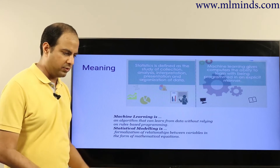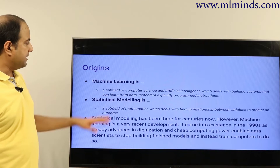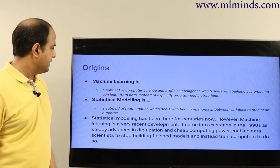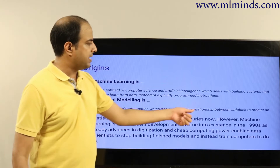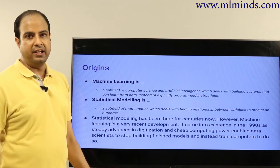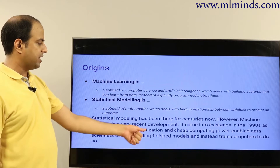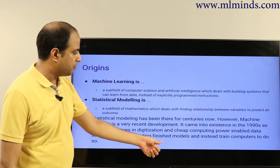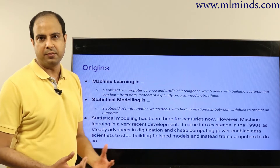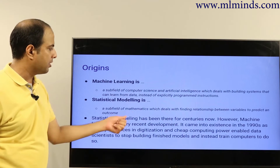Statistical modeling is the formalization of relationships between variables in the form of mathematical equations, so statistics is actually closer to maths than machine learning. In terms of origins, machine learning evolved from AI and has its roots in computer science, while statistical modeling has its origins in mathematics — dealing with finding relationships between variables to predict an outcome. Statistical modeling has been around for centuries; it's a pretty old field. Machine learning, on the other hand, is relatively new — it came into existence in the 1990s as advances in digitalization and cheap computing power enabled data scientists to have computers build models rather than building them manually.